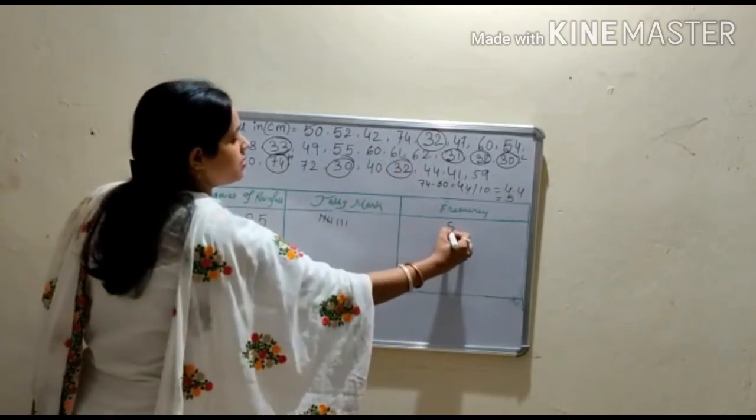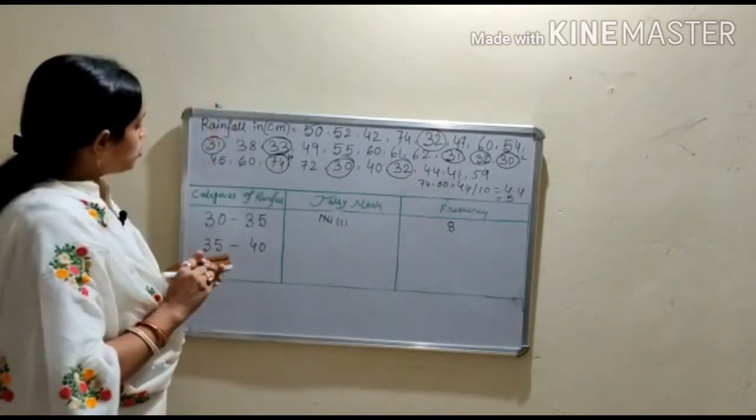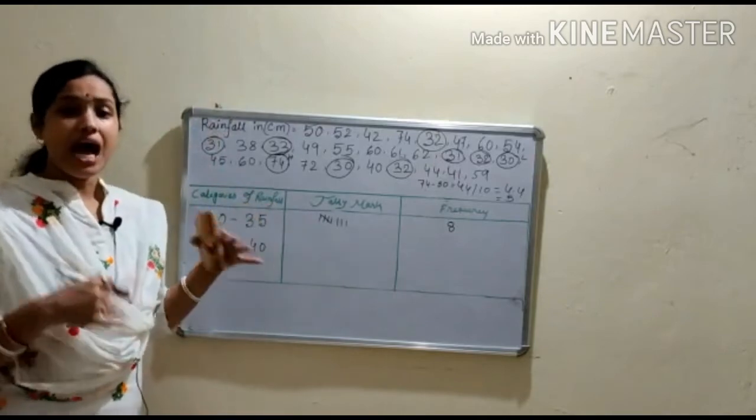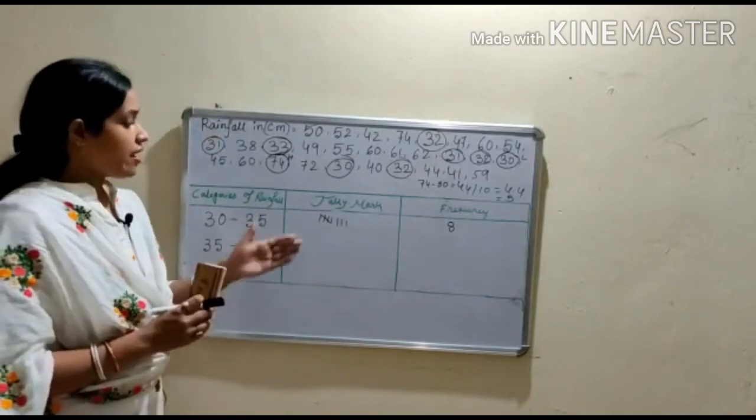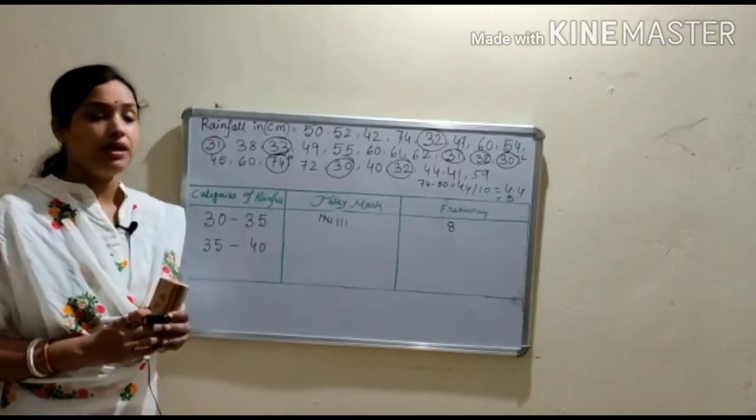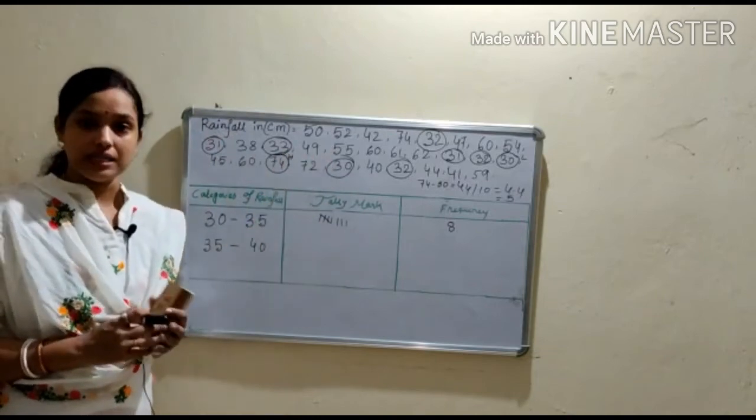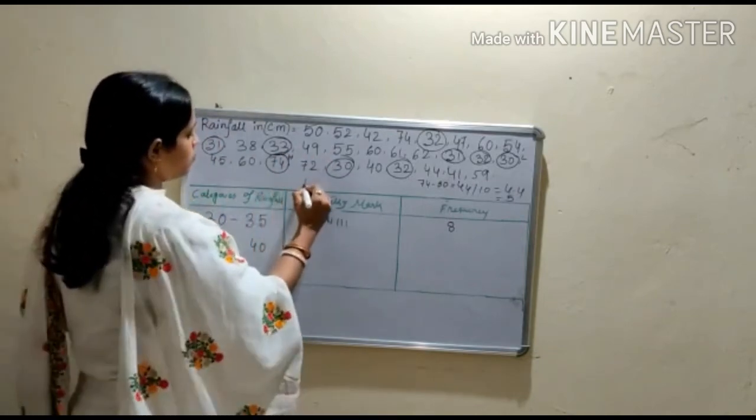So this is a simple example of how you construct a frequency distribution table from raw data. So here you write frequency.